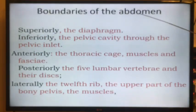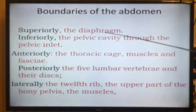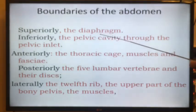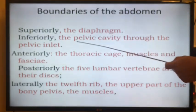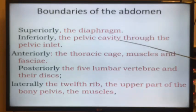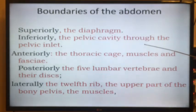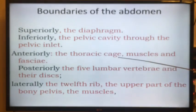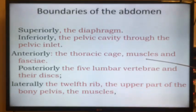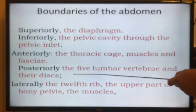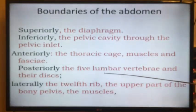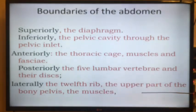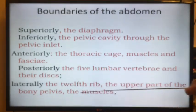What are the boundaries of the abdomen? Superiorly, the diaphragm. Inferiorly, the pelvic cavity through the pelvic inlet. Anteriorly, the thoracic cage, muscles, and fascia. Posteriorly, the lumbar vertebrae. And laterally, the 12th rib and the upper part of the pelvis.